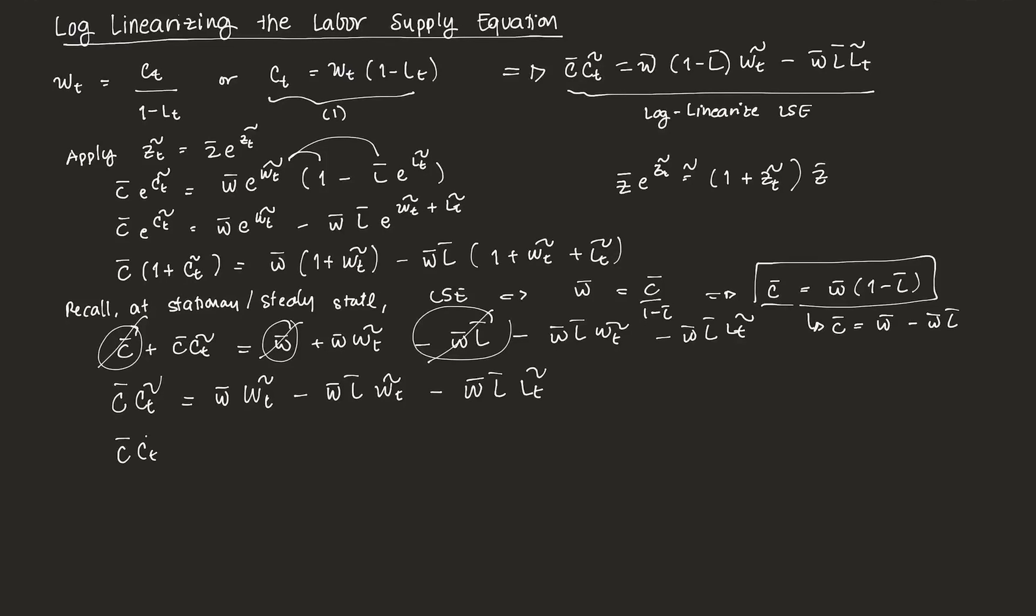So C bar Ct tilde. We can rearrange these two here into the forms. So notice both of them have W bar and Wt tilde. So we can isolate that out. So W bar, then Wt tilde. Then the first form here, this one, apart from W bar and Wt, has nothing.